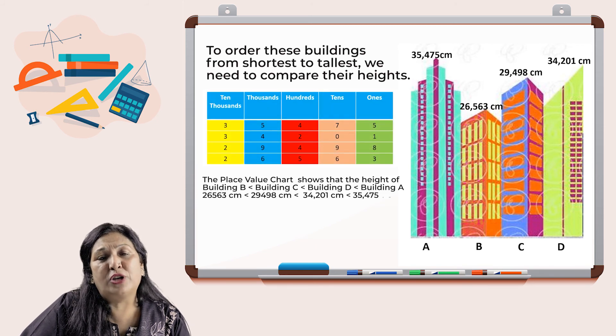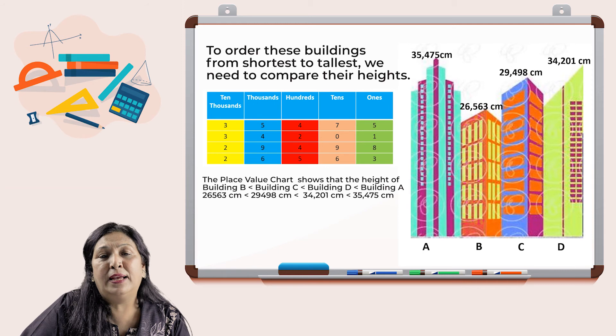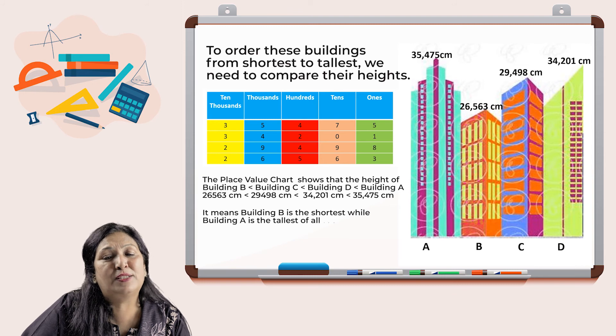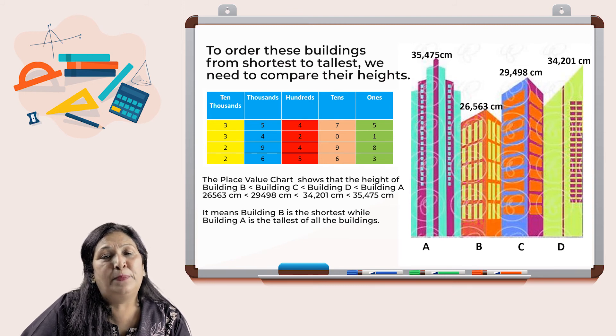The place value chart shows that building B is shorter than building C, and they both are shorter than building D, and they all are shorter than building A. Building B is the shortest while building A is the tallest of all the buildings.